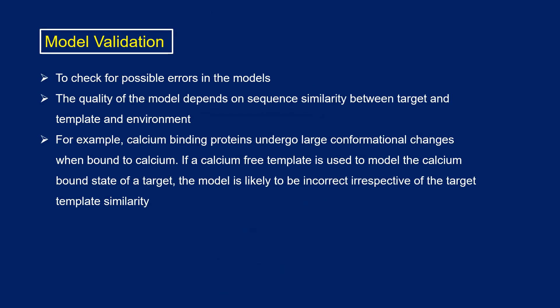In model validation, we check for possible errors in the generated models. The quality of the model depends on the sequence similarity between the target and template — at least 30% sequence similarity is required to obtain a good quality model. We also need to consider environmental factors. For example, calcium-binding proteins undergo large conformational changes when bound to calcium, so using a calcium-free template to model a calcium-bound state will lead to an incorrect model.